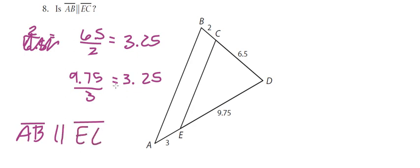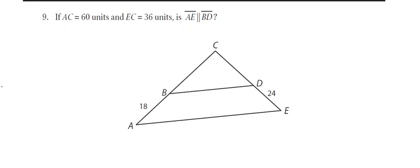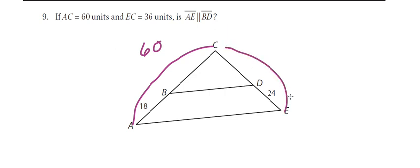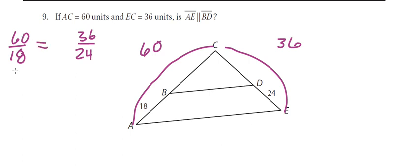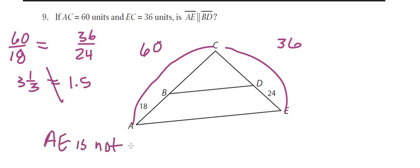Then we go to number 9. They give us the whole value of 60 and this whole value of 36. I can put 60 over 18 and check if that equals 36 over 24. Well, 60 over 18 is 3 and a third, and 36 over 24 is 1 and a half — those are not equal, therefore the side lengths are not proportional. So AE is not parallel to BD.